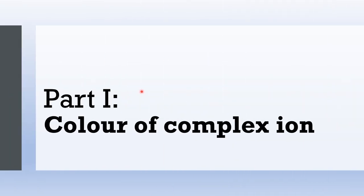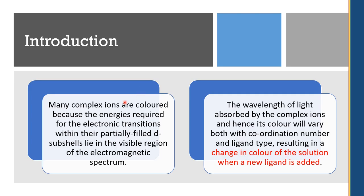Part One: color of complex ions. From lecture, you know that complex ions are colored. This is because of the transition of electrons within the orbitals, which requires energy in the visible region of the electromagnetic spectrum. Due to the ligand type, this creates crystal field splitting with different energies.